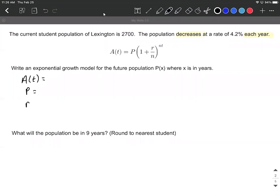So A, P, R, N, and T is going to be all of our variables in the traditional model as it's written up above.